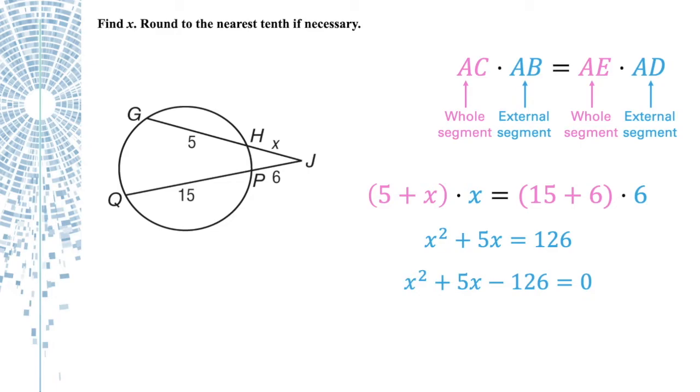This factors into X plus 14 times X minus 9. Now we need to take each of those and solve for X. So X plus 14 equals 0, X equals negative 14. Well, we can't have a negative X value, so that one's not going to work. What about the other one? X minus 9 equals 0, so X equals 9. That works. So in this situation, X equals 9.